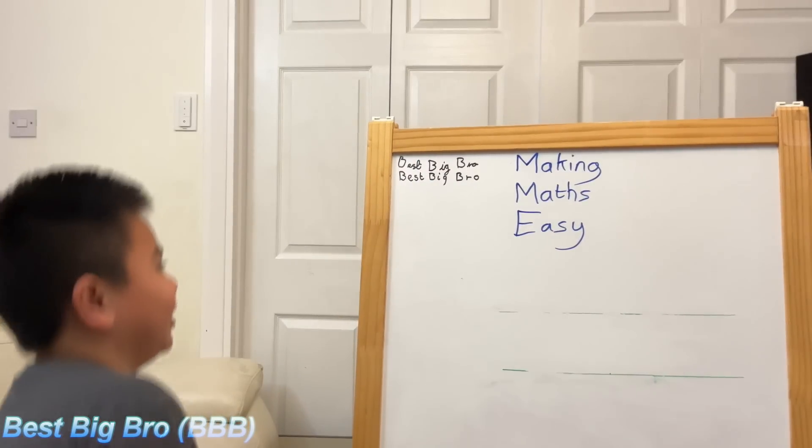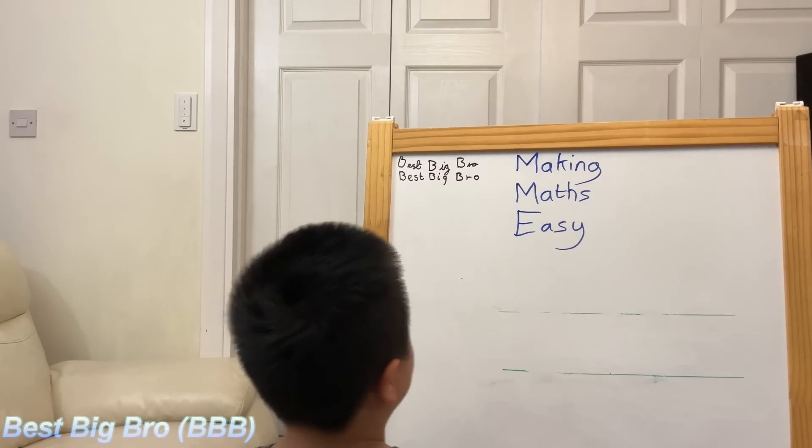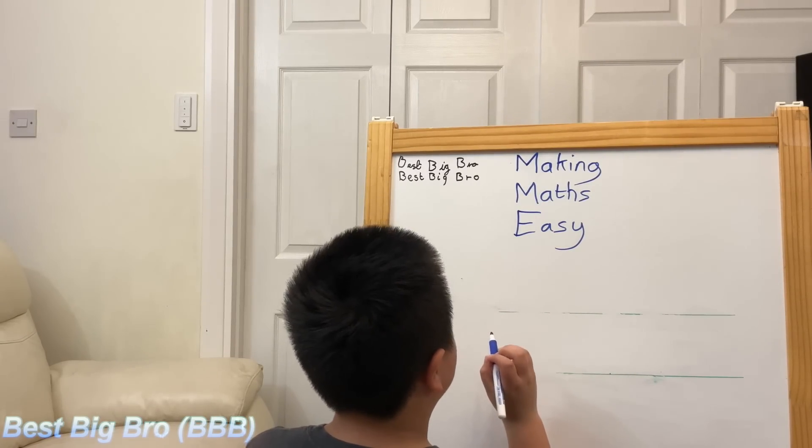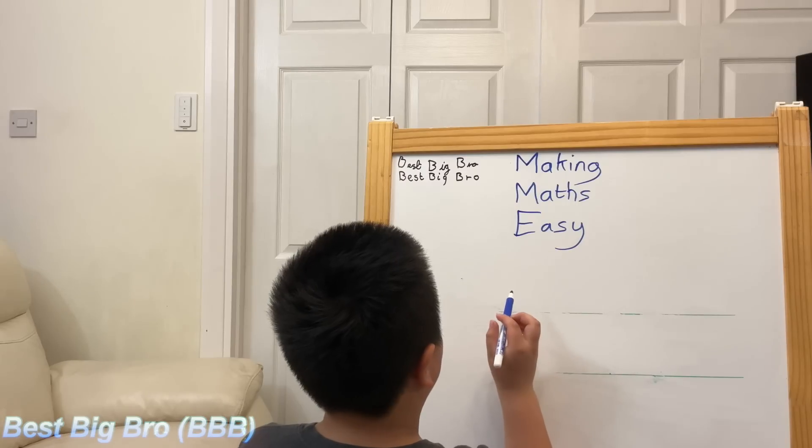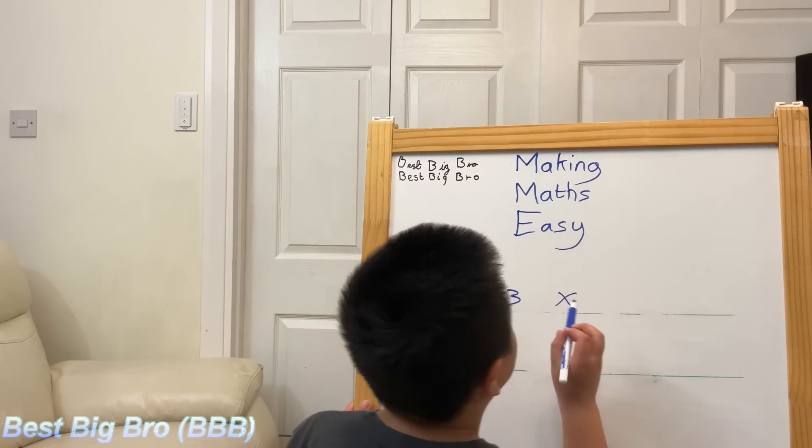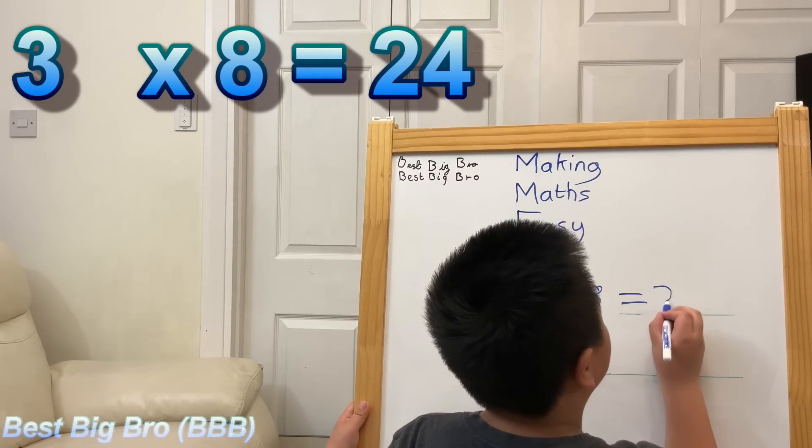So 29 is closer to 30. So I can do 30 times 8 just like in my last video. 3 times 8 equals 24.